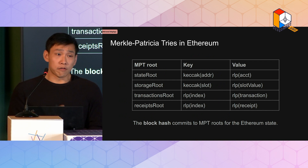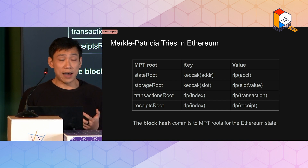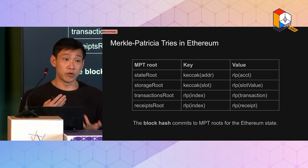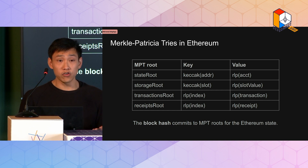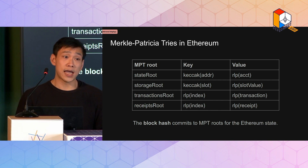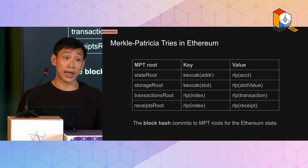There are four key Merkle-Patricia tries in Ethereum. There's the state trie, which is a mapping between the Keccak hash of your address and an RLP encoding of the relevant data about your account — for example, the balance, the nonce, and most importantly the storage trie, which is your local account storage. That stores a key-value mapping between the Keccak hash of a slot and the data at that slot. Finally, within each block we have Merkle-Patricia tries of the transactions and the receipts of those transactions, which are mappings between the index and the serialization of the transaction or receipt. All of these Merkle-Patricia trie roots are committed to within the block hash in the block header.